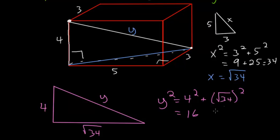The square root of 34 squared, the square root and square cancel each other out, and we're left with 34. And 16 plus 34 is just 50. So y is equal to the square root of 50.